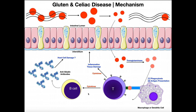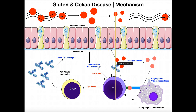The helper T cell initiates the immune response in two ways. One is it can activate B cells. B cells are another type of lymphocyte that, when activated, can start proliferating into plasma cells and begin making antibodies. The helper T cell triggers activation of the B cell into a plasma cell through cytokines. The B cell differentiates into a plasma cell and starts making specific antibodies against gliadin — generally termed anti-gliadin antibodies. These antibodies circulate and, if they encounter a gliadin protein, will stick to it and mark it for destruction.